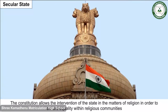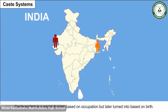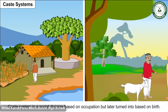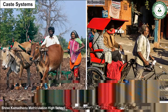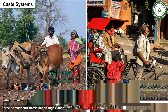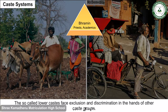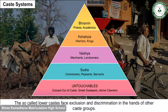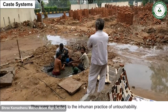Caste System: Caste system is a social division originally based on occupation, but later it became based on birth. Those who took over low-paid jobs were termed as low castes. The so-called lower castes face exclusion and discrimination at the hands of other caste groups and were subjected to the inhuman practice of untouchability.